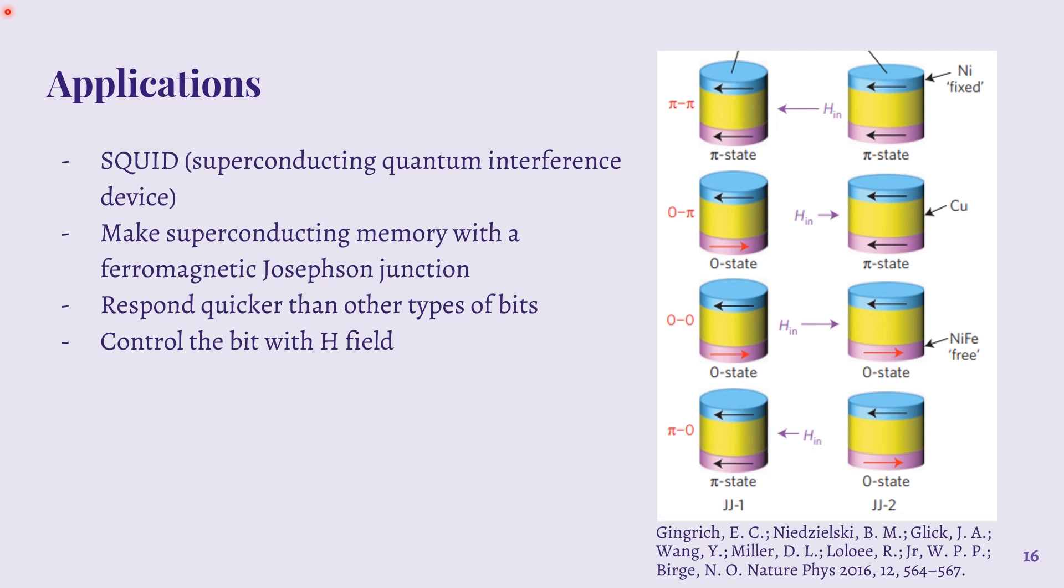One application of such Josephson junctions is in what are called superconducting quantum interference devices or SQUIDs. And these are made out of two Josephson junctions. So in this illustration over here, both of these Josephson junctions together make up a squid.